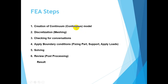If we are going to do finite element analysis, there are steps to consider. The first is the creation of a continuous model — our geometry — using any design program like SolidWorks, CATIA, AutoCAD, or Inventor. Then we perform discretization or meshing, which is dividing the geometry into elements, as we will see in ANSYS.